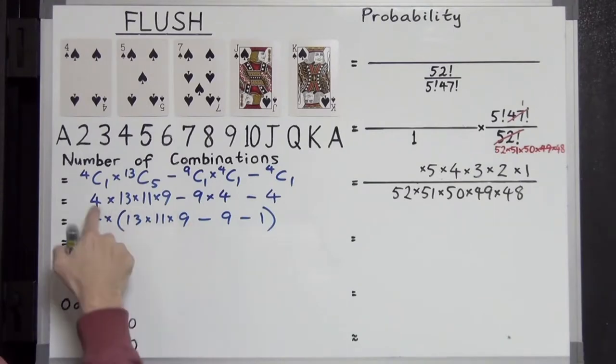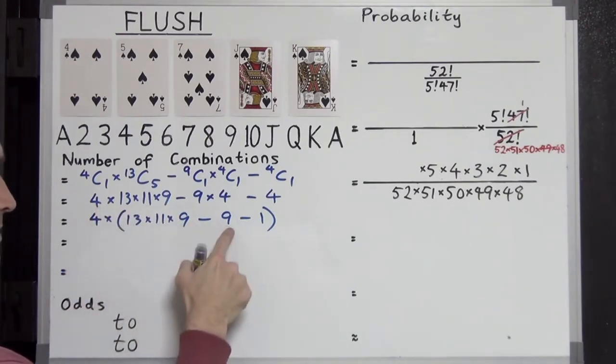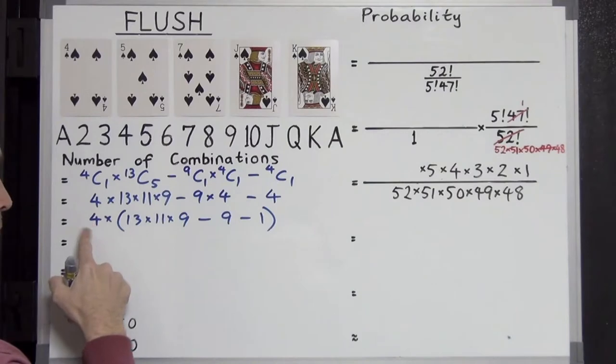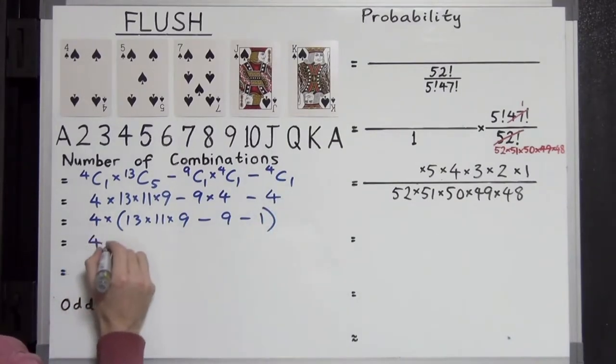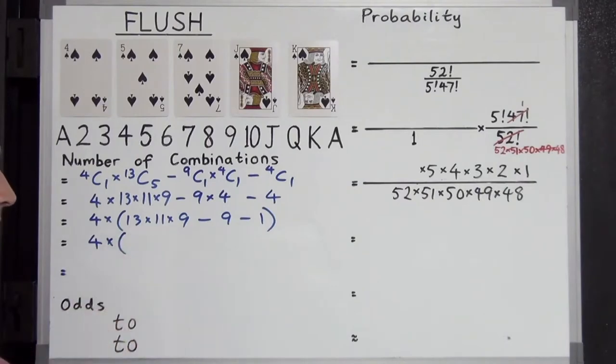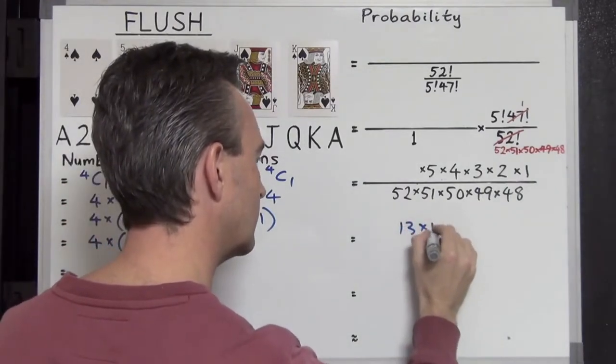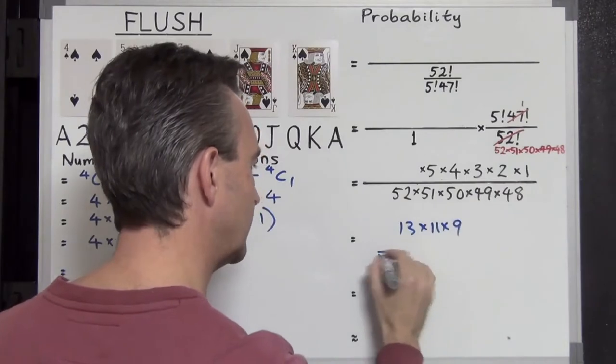Does that make sense? Let's check it. 4 times all this equals all this. 4 times 9 equals 9 times 4. 4 times 1 equals 4. And this boils down to 4 times 13 times 11 times 9. Hmm, what's that? Let's just knock this out.